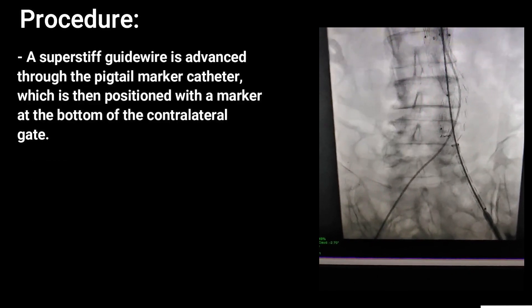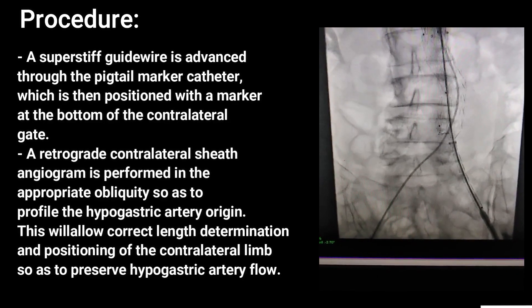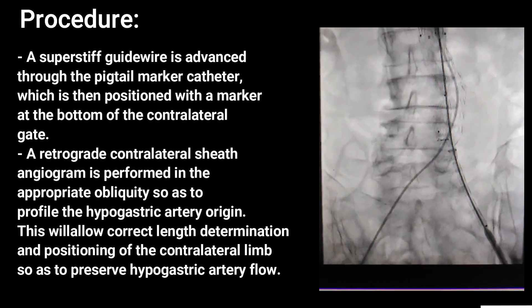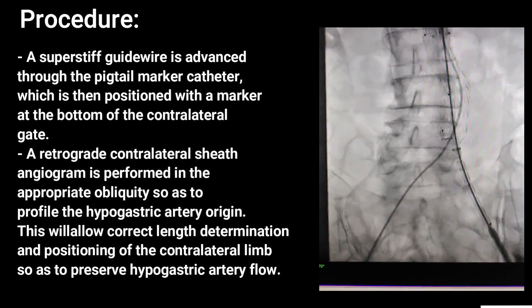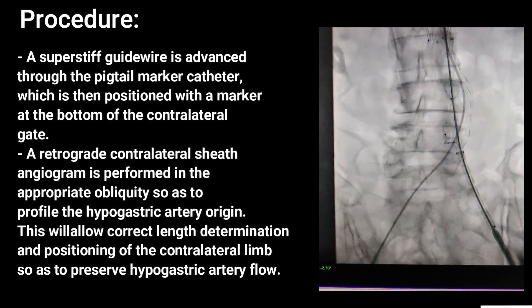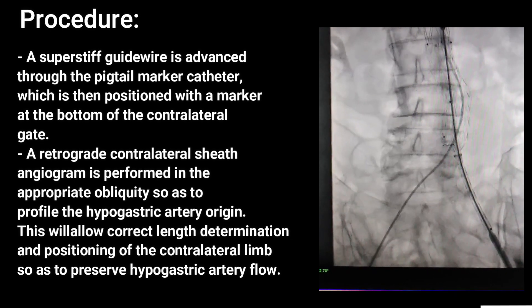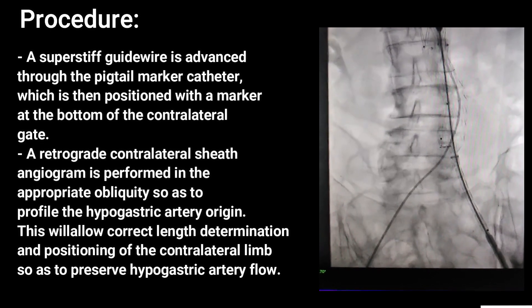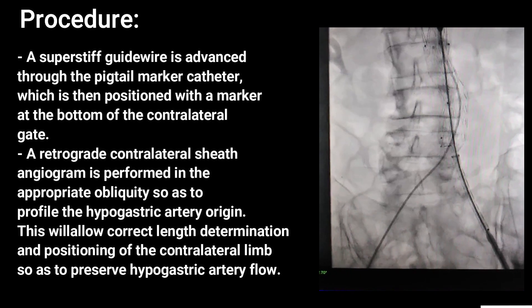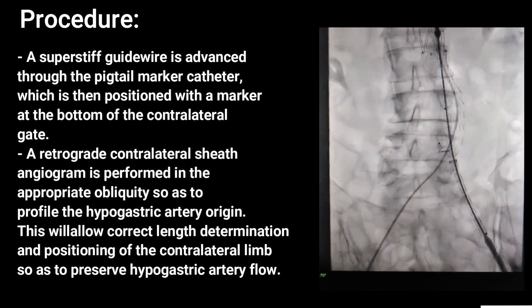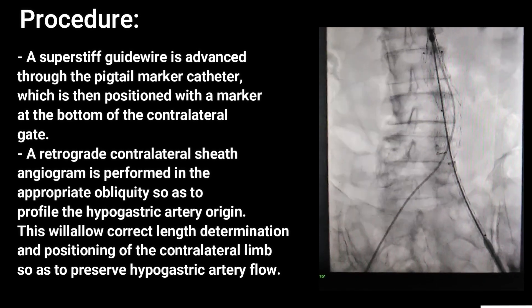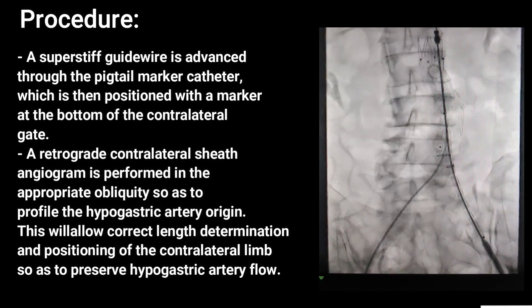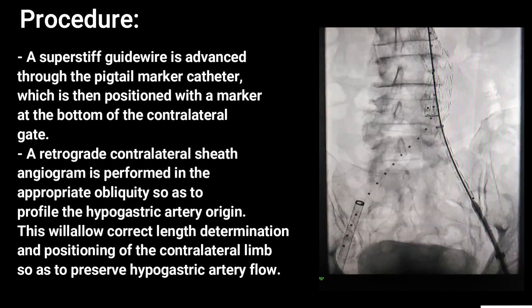A super-stiff guide wire is advanced through the pigtail marker catheter, which is then positioned with a marker at the bottom of the contralateral gate. A retrograde contralateral sheath angiogram is performed in the appropriate obliquity to profile the hypogastric artery origin. This allows correct length determination and positioning of the contralateral limb so as to preserve hypogastric artery flow.